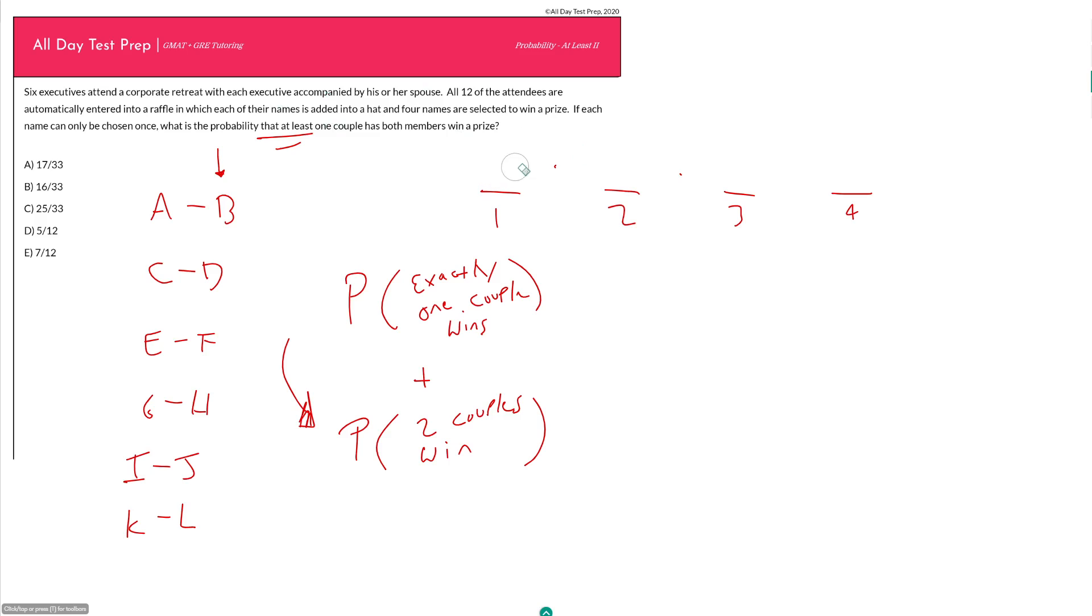So what is another way we can think of the probability of choosing at least one couple? Well, we can think of it as the probability of choosing at least one couple is the same as one minus the probability of not selecting at least one couple, which really means one minus the probability of selecting no couples.